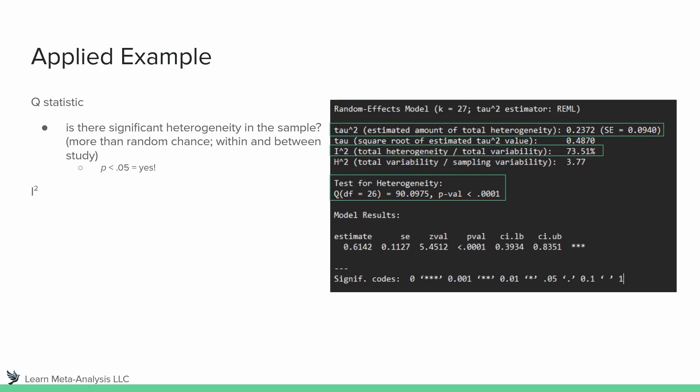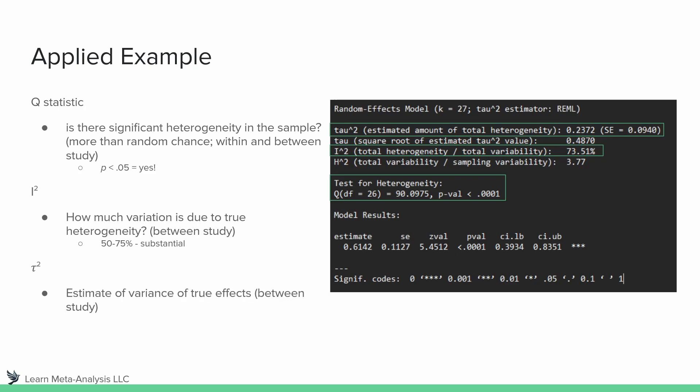Next, we move to I-squared to find out what percent we have — how much variation is due to true heterogeneity between studies. We can see we actually have 73.5% in our results, which falls into that substantial category. Last but not least, we look at tau-squared, which gives us the estimate of the variance of the true effects between studies. That value is 0.2372, which rounds to 0.24.